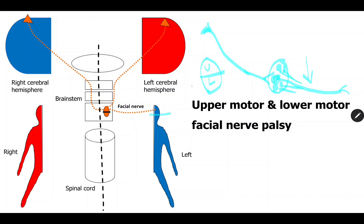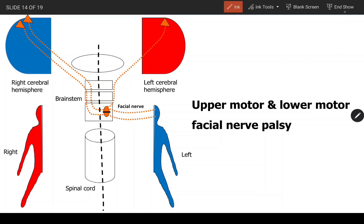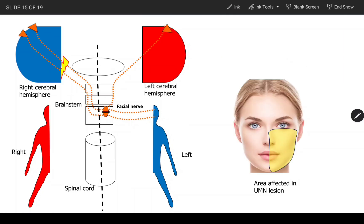The upper part of the facial nucleus, which supplies the upper part of the face, receives bilateral supply from both cerebral hemispheres. However, the lower part of the nucleus, which supplies the lower part of the face, receives only unilateral supply from the opposite side — that is, contralateral representation. So the upper facial muscles are supplied bilaterally, while the lower facial muscles are supplied only contralaterally.